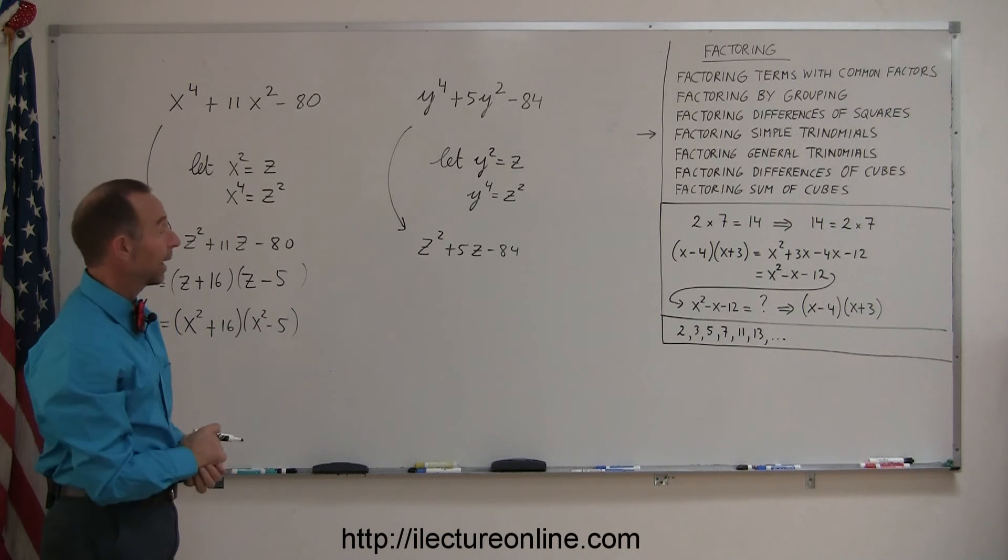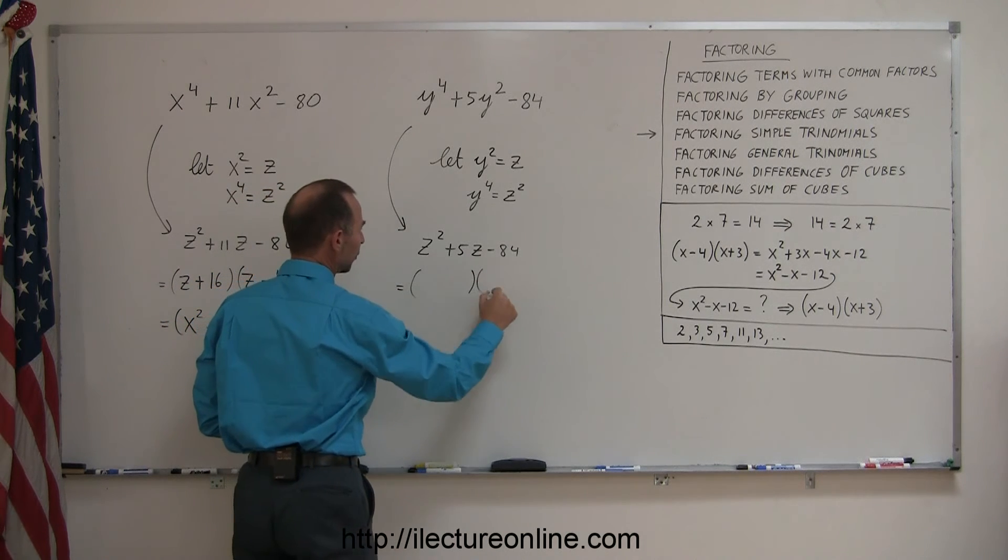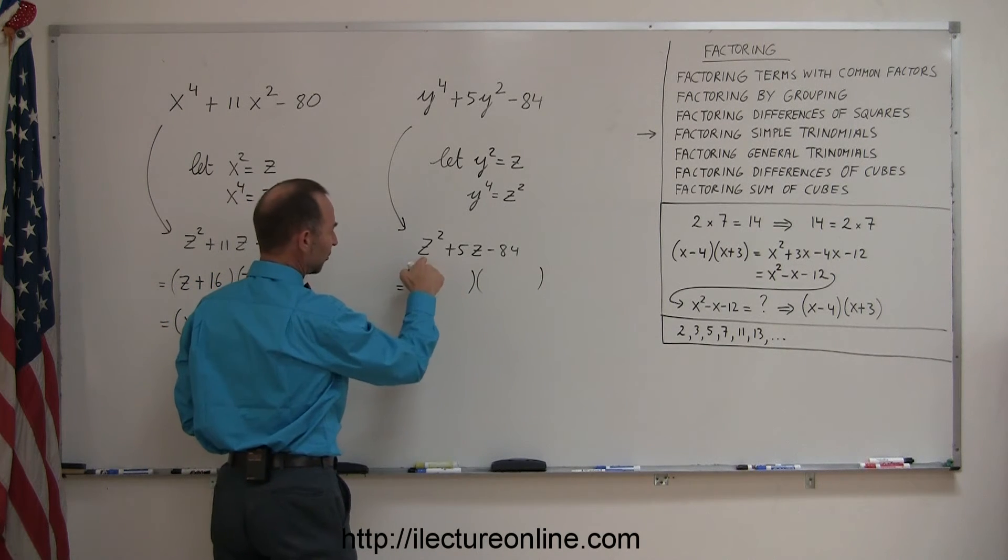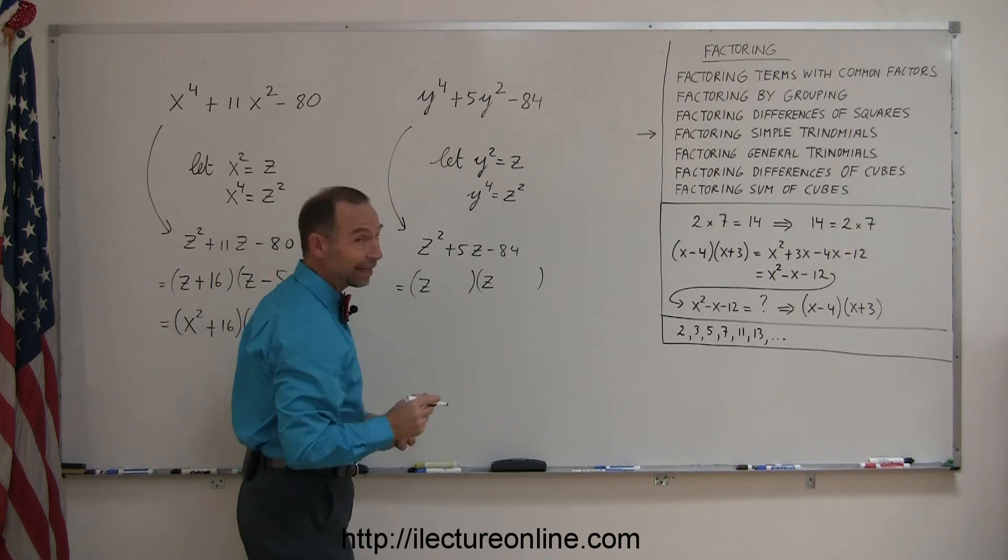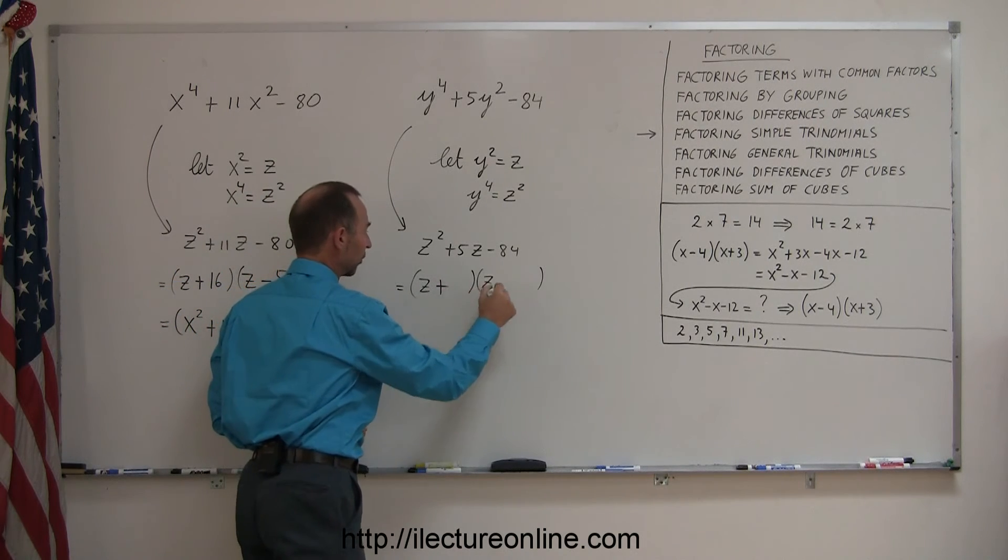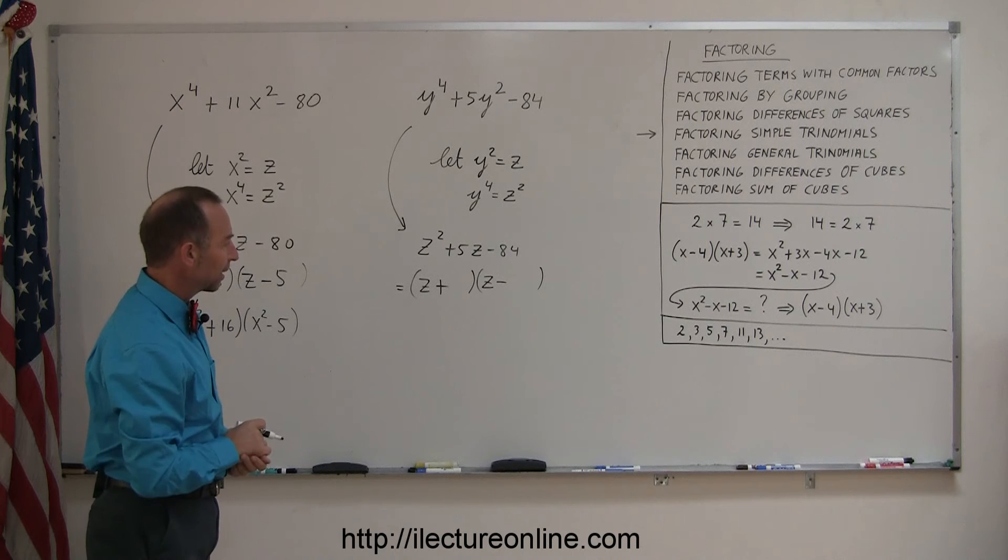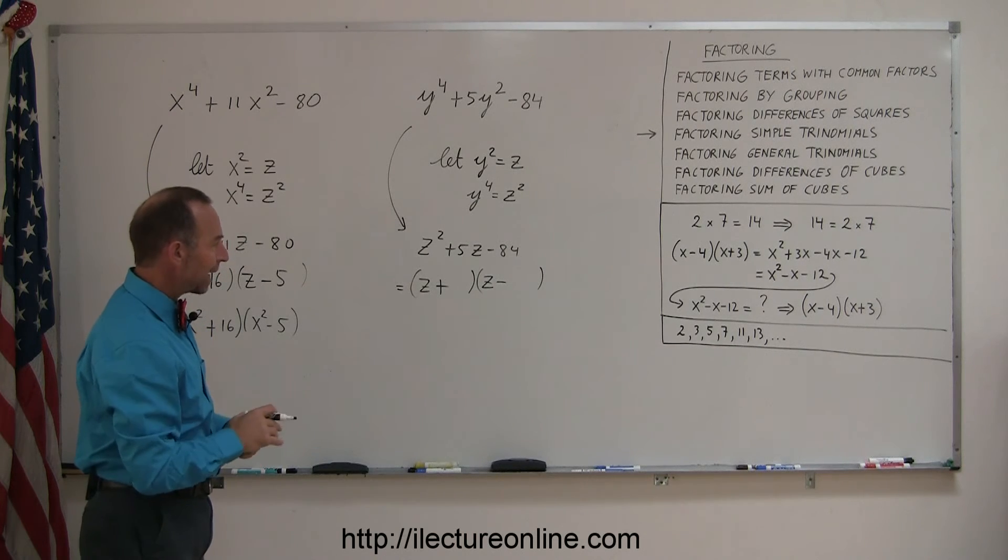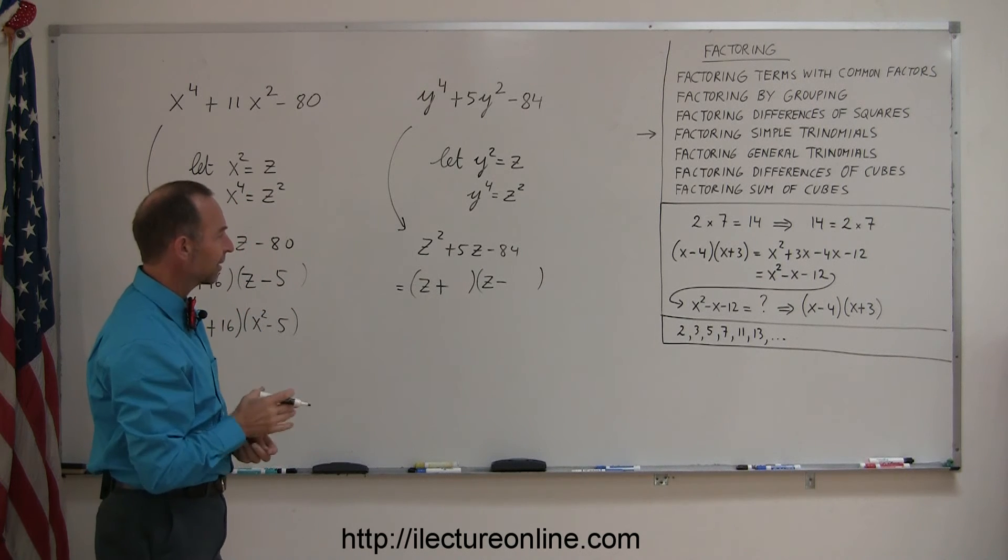We're now ready to factor that. This is equal to the product of two binomials. Since we have a z squared here we need a z and a z. The last number here is negative, again that means we need one positive and one negative number, because the only way to get a negative is by multiplying a positive times a negative. When you add them you get a positive 5, that means the positive number is 5 bigger than the negative number.